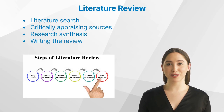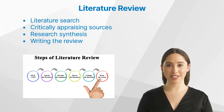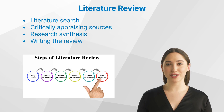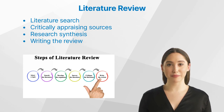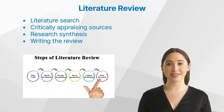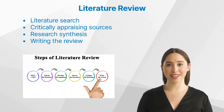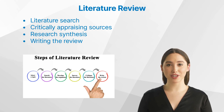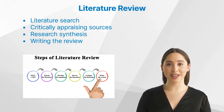The literature review process involves four main steps: literature search, critically appraising sources, research synthesis, and finally writing the review. The first step is to conduct a comprehensive search for relevant literature, which involves using databases and search engines to find articles and other sources. After identifying relevant sources, the next step is to critically appraise them for quality and relevance. This includes assessing the authors, journals, and other sources for credibility and accuracy.